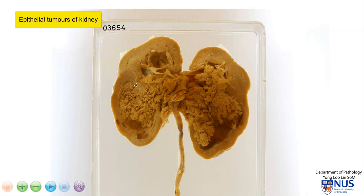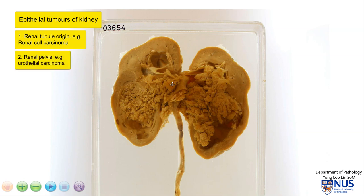Epithelial tumours in the kidney usually arise from two main sources. They can arise from the renal tubules themselves, such as renal cell carcinoma. And they can also arise from the renal pelvis or the pelvic caliceal system — these are urothelial carcinomas. Urothelial carcinomas used to be known as transitional cell carcinoma because they arise from transitional epithelium.